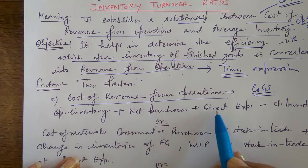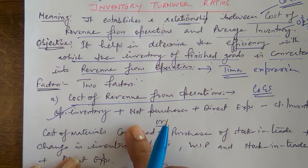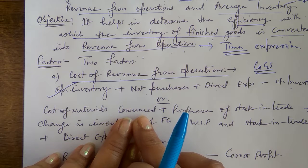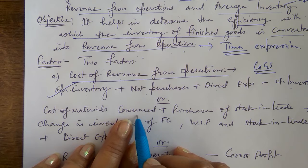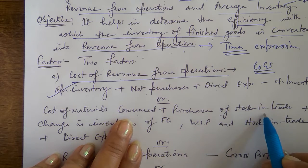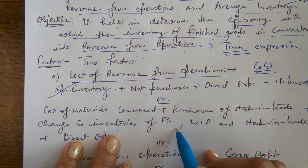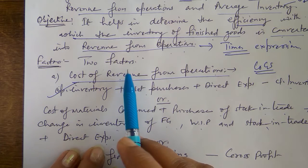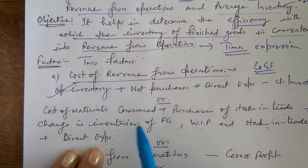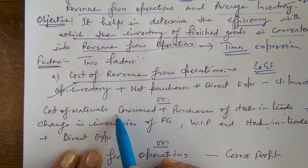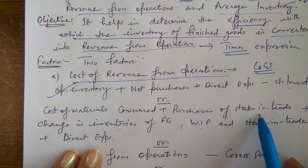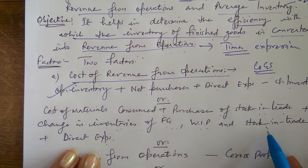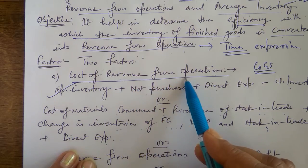Cost of revenue from operations for a company is: cost of material consumed plus purchases of stock-in-trade plus change in inventory of finished goods, work-in-progress, and stock-in-trade, plus all direct expenses. Alternatively, change in inventory means opening minus closing. Another method: revenue from operations minus gross profit gives cost of revenue from operations. If there is a gross loss, it is added to revenue from operations.